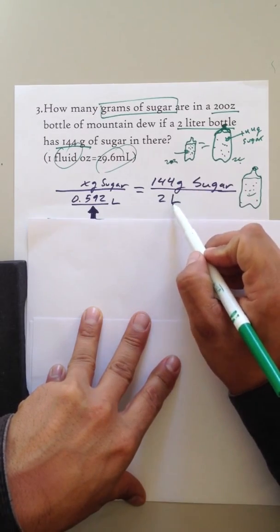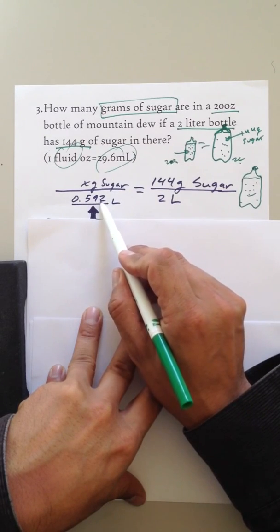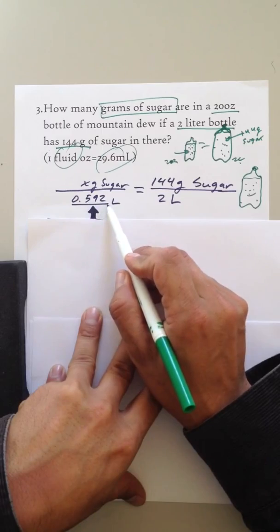144 grams of sugar per 2 liters, and we're setting up a ratio here, is equal to x grams of sugar over how many liters, 0.592. Where did I get that from?